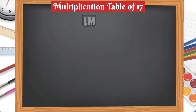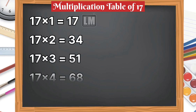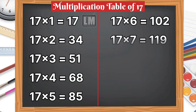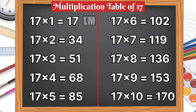Table of 17. 17 1s are 17, 17 2s are 34, 17 3s are 51, 17 4s are 68, 17 5s are 85, 17 6s are 102, 17 7s are 119, 17 8s are 136, 17 9s are 153, 17 10s are 170.